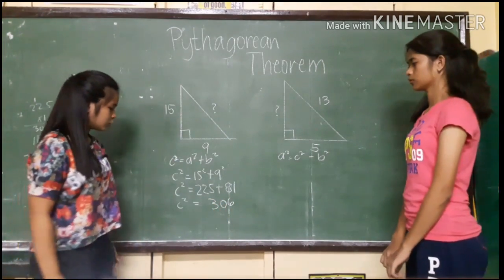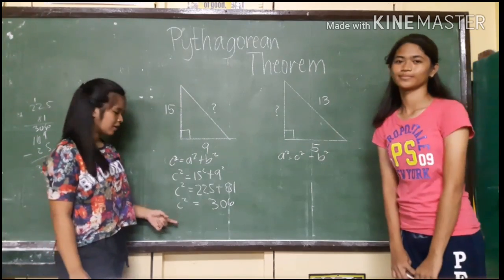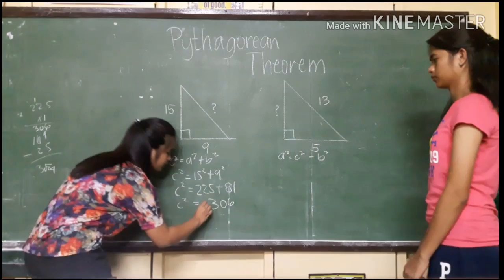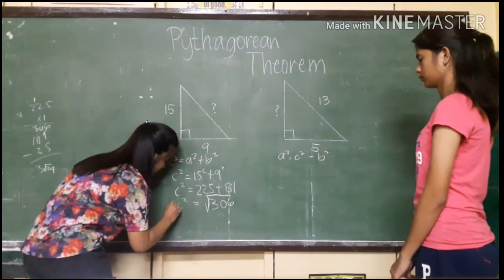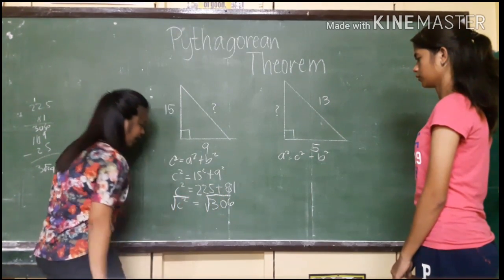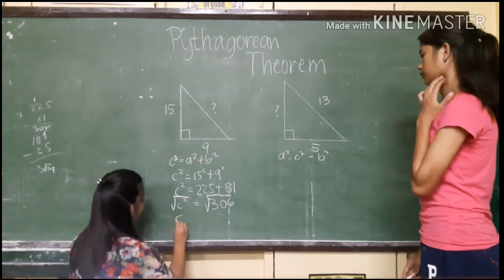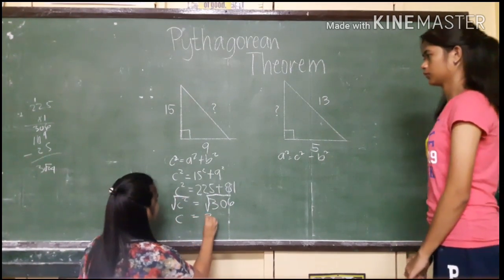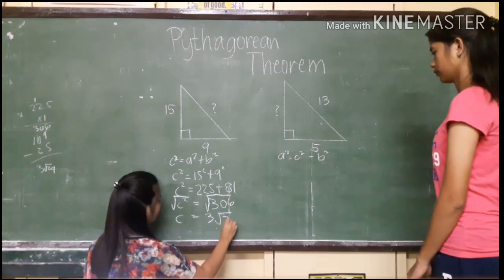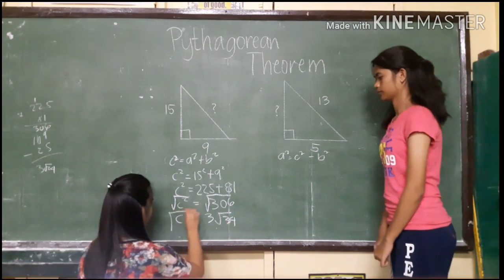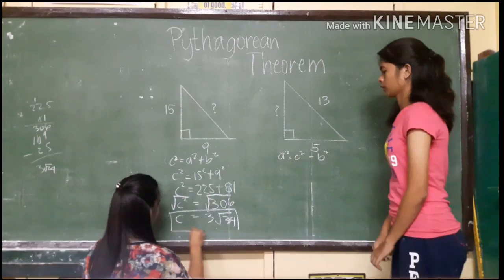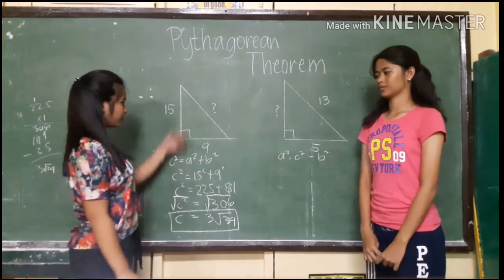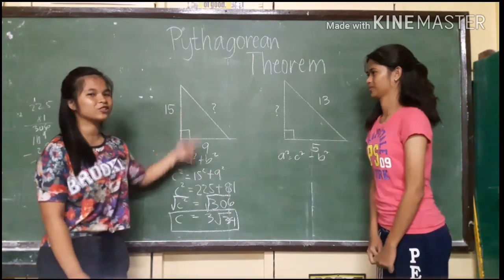Next, to find c by itself, we take the square root of both sides. And the square root of 306 is 3 times the square root of 34. This is the value of the hypotenuse in this right triangle.